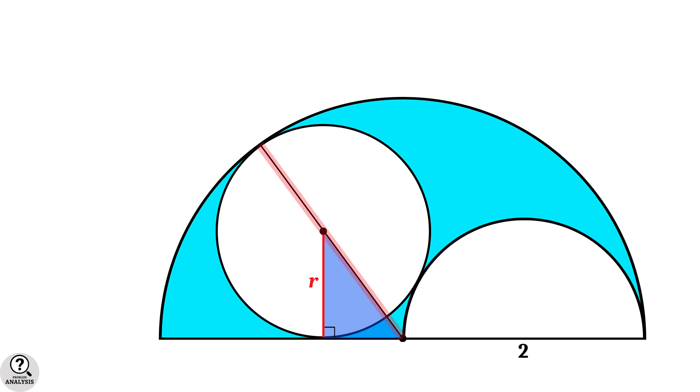Now in the figure, this line is a radius of the larger semicircle, and so equal to 2 units. But this part is a radius of the circle, so it is equal to R units. And therefore, the hypotenuse of the right triangle will be 2 minus R.